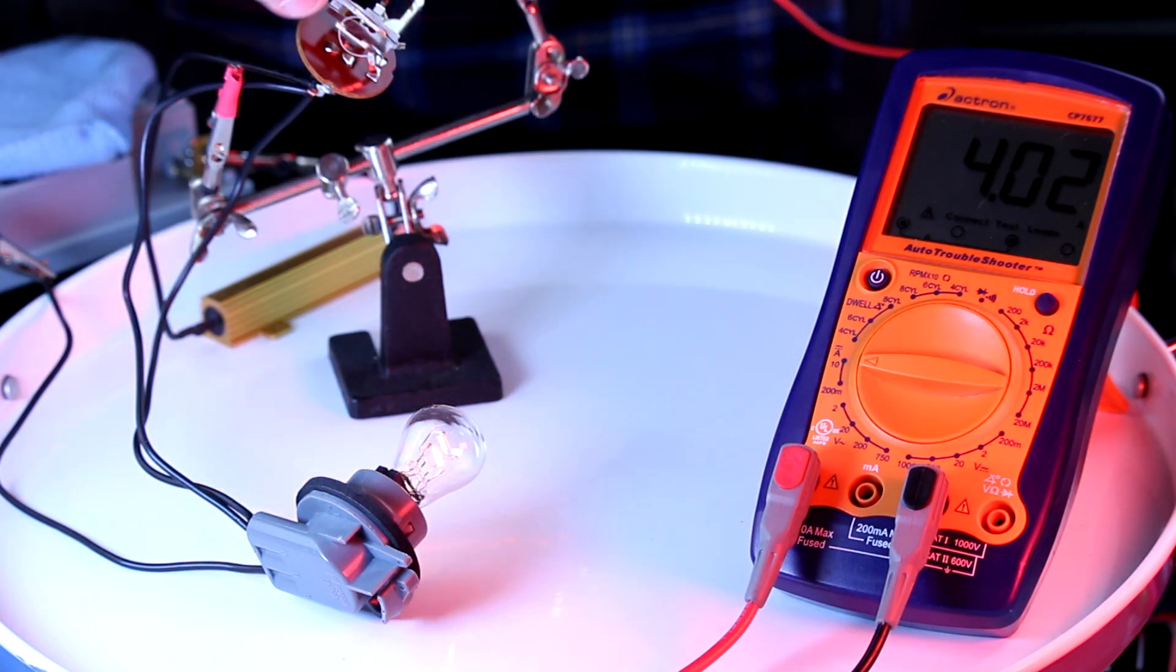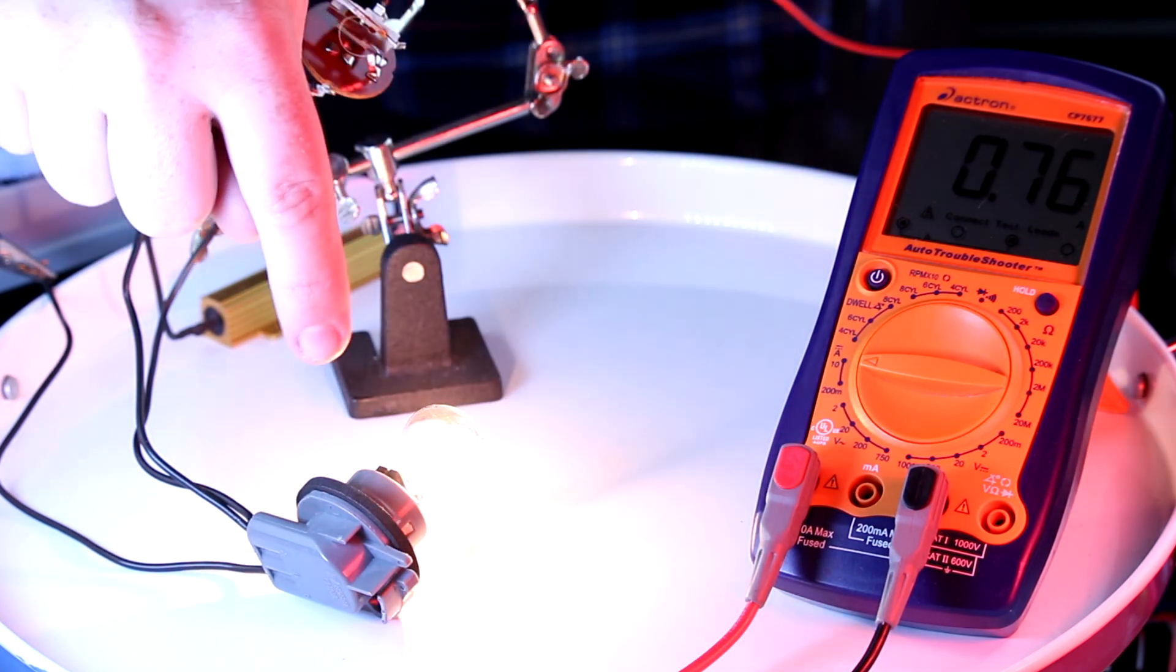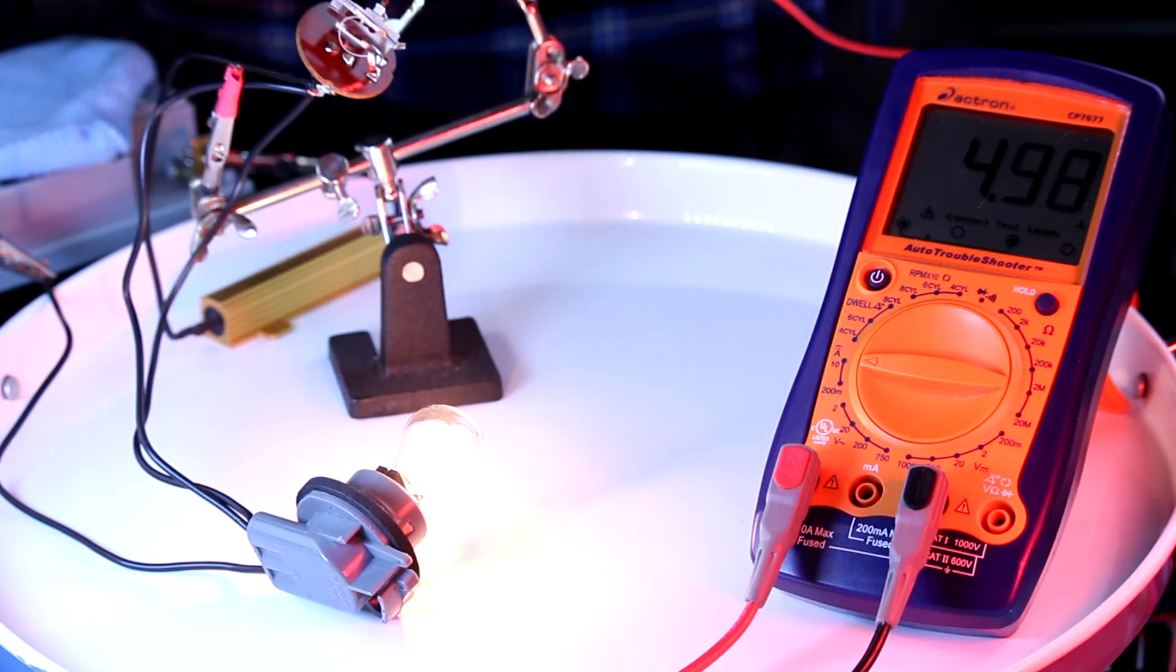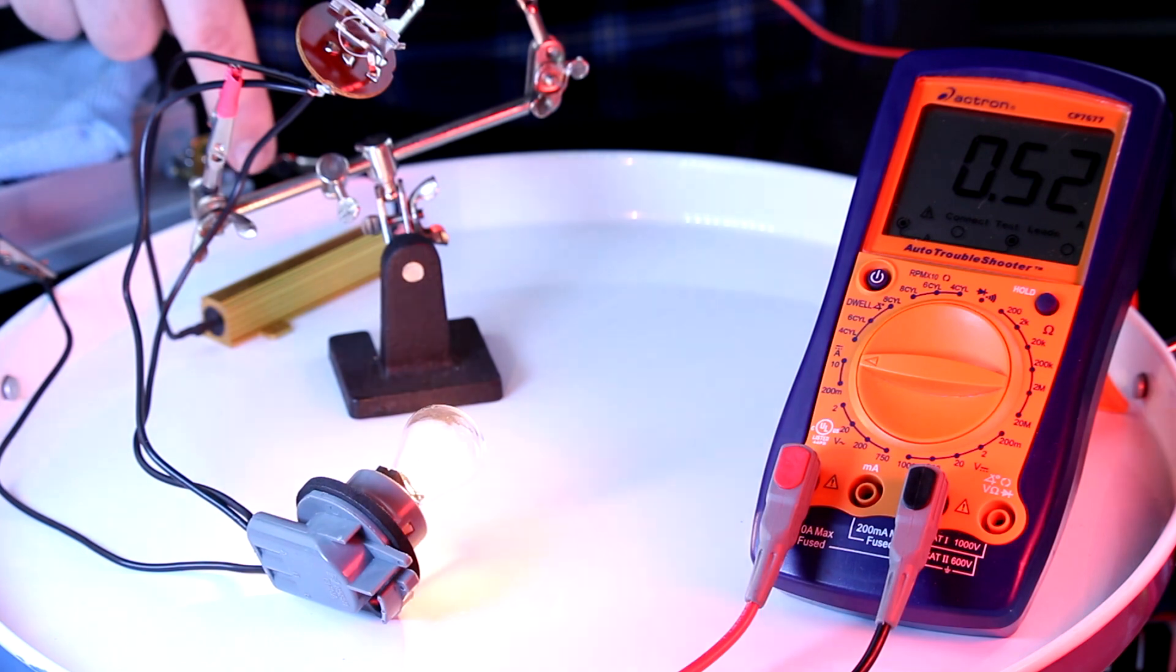Originally all the power that was going through this circuit had to go through this bulb, and whatever this bulb was going to allow was it. But now this resistor is allowing some power through too.